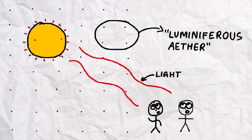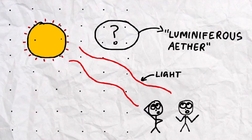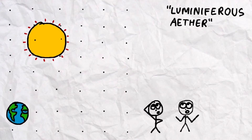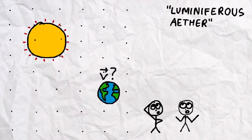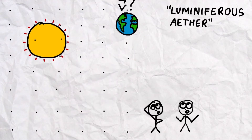The problem with this wave model of light was that no one could say for sure what the ether was. An obvious question they asked to get to the bottom of this mystery is: at what speed is the luminiferous ether traveling? Or rather, what speed are we traveling at relative to it?